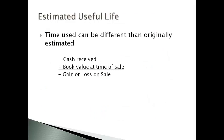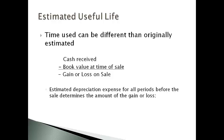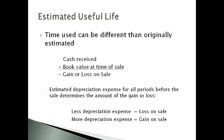An asset can have a different useful life than originally estimated. When this happens, the estimated book value will not equal the cash received when the asset is sold. The gain or loss is recognized for the difference between the cash received and the book value when the asset is sold. The estimated depreciation expense for all periods up to the date of sale determines the amount of the gain or loss. A lower estimated depreciation expense each period will likely result in a loss, while a higher depreciation expense each period is more likely to result in a gain.